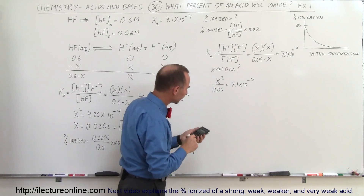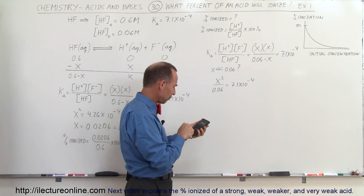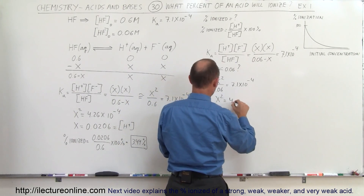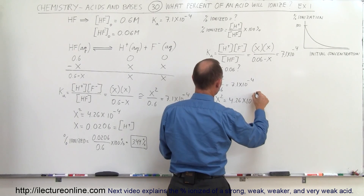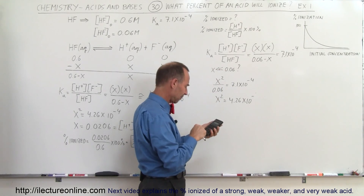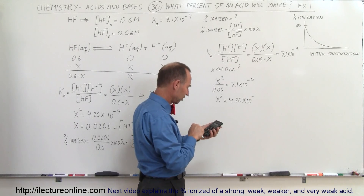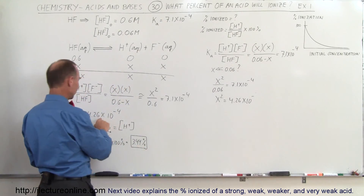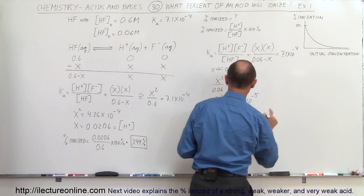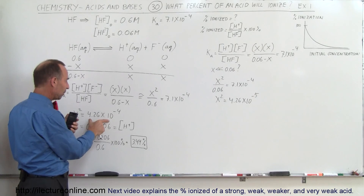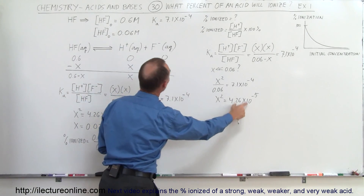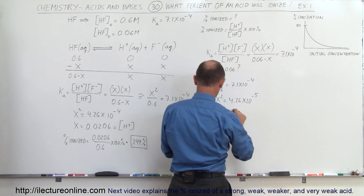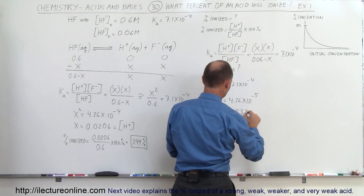So x squared equals 7.1 times 10 to the minus 4 times 0.06, which gives us 4.26 times 10 to the minus 5. Notice how that has changed — previously x squared equaled 4.26 times 10 to the minus 4 with the higher initial concentration, and now with the lower initial concentration it equals 4.26 times 10 to the minus 5. Taking the square root gives x equal to 6.53 times 10 to the minus 3.